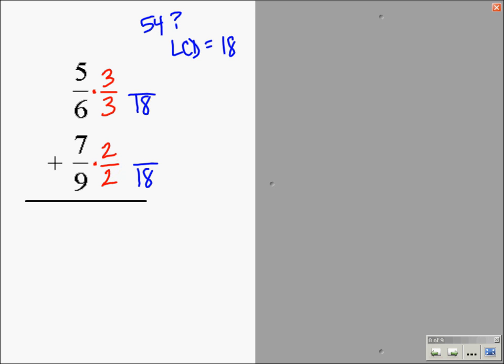Now I'm going to go ahead and multiply across. 5 times 3 is 15, 7 times 2 is 14. Now that I have the same denominator, I can add them.